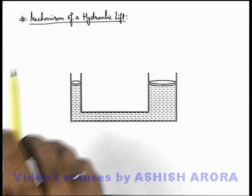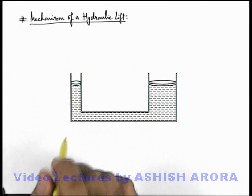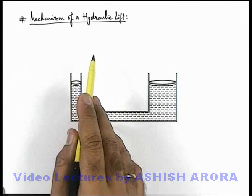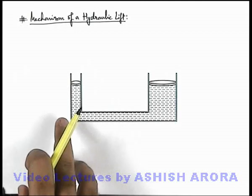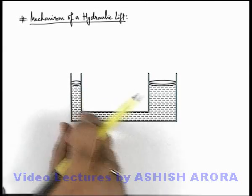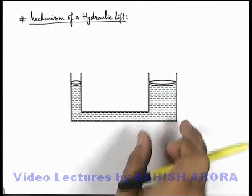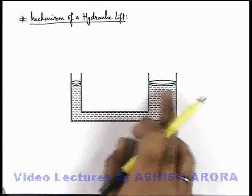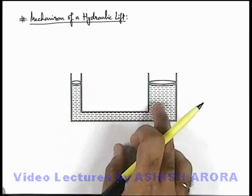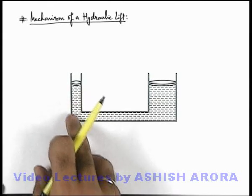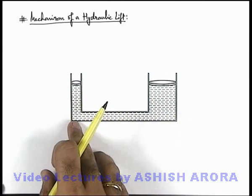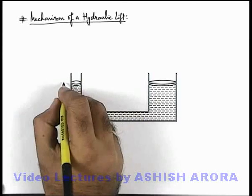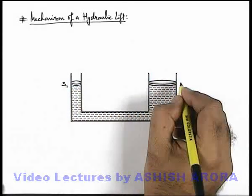Let us discuss the mechanism of a hydraulic lift, which is also based on the applications of Pascal's law. In a typical hydraulic lift there are two tubes — one is a very narrow tube and the other is a broad vessel. At the top of the fluid filled in these two tubes, which are connected by an opening at the bottom, they are closed by two different pistons with cross-sectional areas S1 and S2.